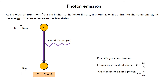In photon emission, we irradiate a sample with light energy and promote an electron to a higher energy level within the atom. When that electron transitions from the higher energy level back to a lower energy state, a photon is emitted. The important thing is that the energy of that photon is exactly the same as the energy difference between the two states. So the electron has an initial state and a final state, and the emitted photon's energy is exactly equal to that energy difference. If we know the energy of that photon, we can calculate the frequency and the wavelength of the photon.